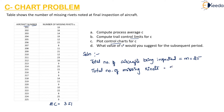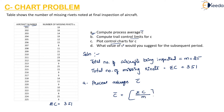So sigma C equals 351. The first step is to calculate the process average. C-bar is written as sigma C divided by M, which is 351 divided by 25, giving us a value of 14.04. So C-bar is 14.04.